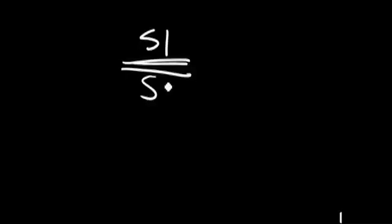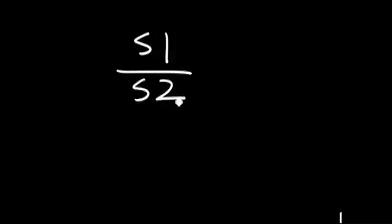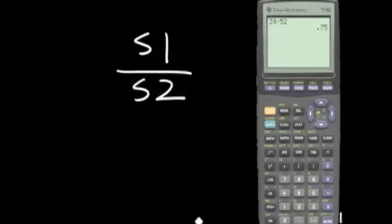There are 51 out of 52 cards that are non-aces of spades. Numerically, 51 divided by 52. If we approximate this answer to the nearest thousandths, the 0 is in the thousandths position, and the digit to the right is a 7, so that means we add 1 to the 0 for an answer of 0.981.